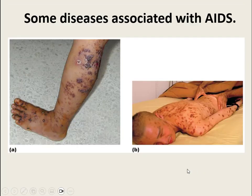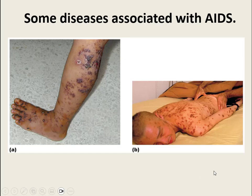A couple of diseases associated with AIDS: one is disseminated herpes, meaning it spreads throughout the entire body with skin lesions everywhere because nothing can keep it in check. There's also Kaposi's sarcoma — a viral cancer that only affects those with no working immune system in the late stages of HIV infection. It is a cancer of the blood vessels, causing bursting blood vessels all over the body.